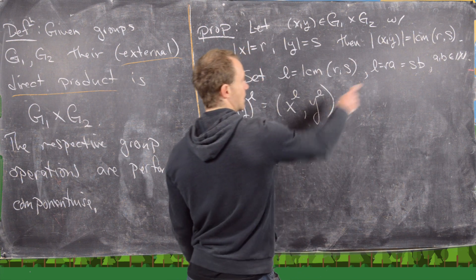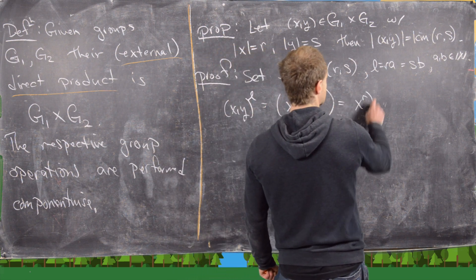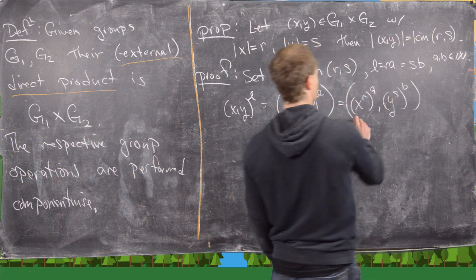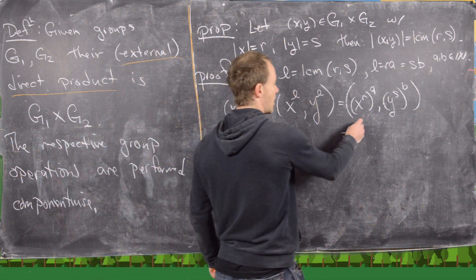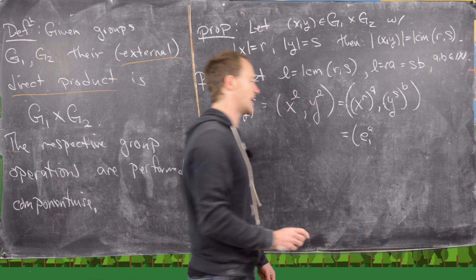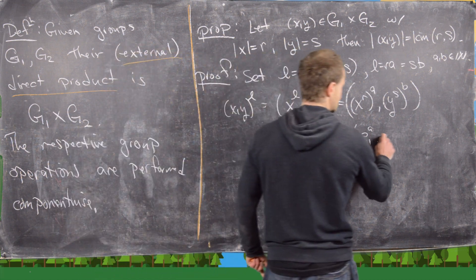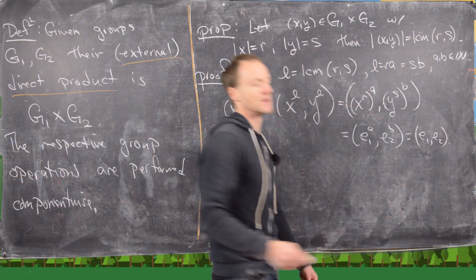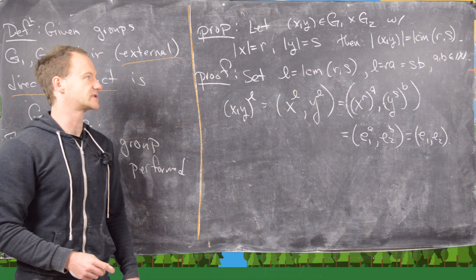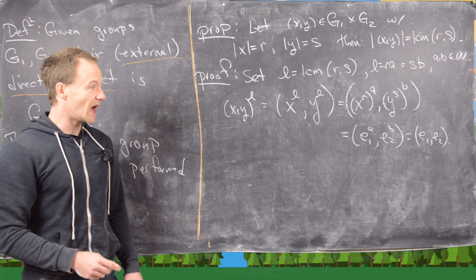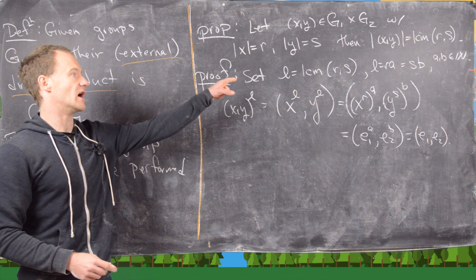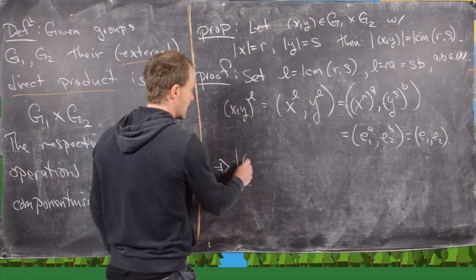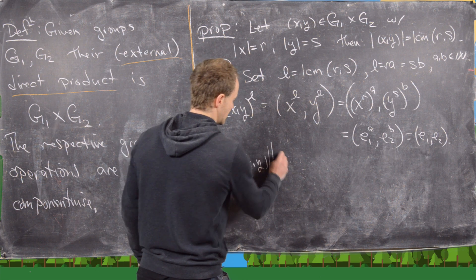We can replace L: x^L = x^(r·a) = (x^r)^a, and y^L = y^(s·b) = (y^s)^b. But x^r is the identity e1 in the first group, and y^s is the identity e2 in the second group. So we get (e1, e2), which is the identity in the direct product. This tells us that the order of (x, y) divides L.